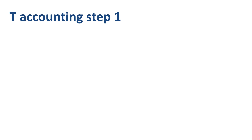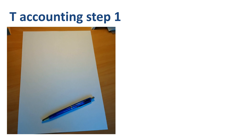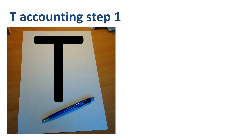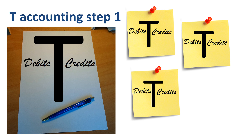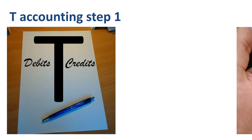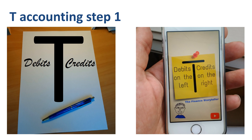T-accounting step 1. Take a piece of paper and draw a T — not that one, a capital T. Now write debits on the left, credits on the right. This is something you need to memorize. Repeat it to yourself 50 times per day, put post-it notes all over your house, or even better, download the Finance Storyteller lock screen wallpaper image for your phone, so you can repeat debits on the left, credits on the right, every single time you pick up your phone.